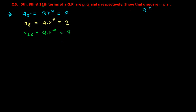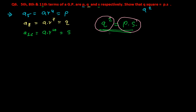Now we need to show that Q squared equals P times S. It is better to solve from the right-hand side. So the right-hand side is P times S, where P is the 5th term and S is the 11th term.